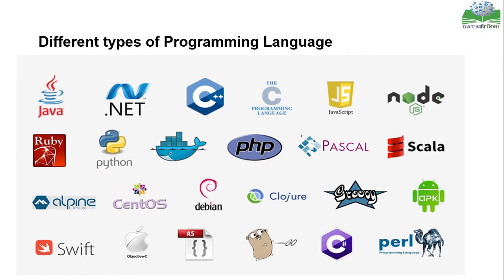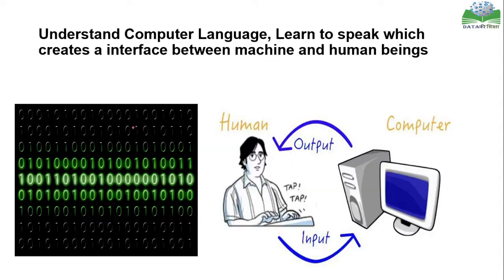We have different types of programming languages in the world — Python, Java, Ruby, C, Scala, and many others. But for this session, we will only be talking about Python programming language.